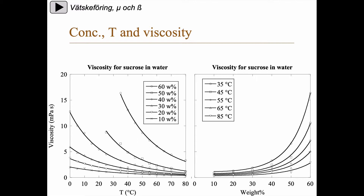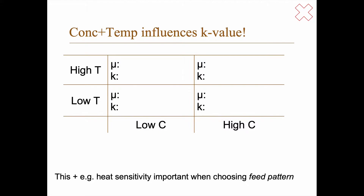If you, for example, have a sucrose in water solution, you have a decreasing viscosity with increasing temperature. So at low temperatures the viscosity is higher, so it doesn't flow as easily, and at high temperature you have a lower viscosity. And if you instead increase the concentration, what you get is an increasing viscosity with increasing concentration. This is important because it affects the heat transfer coefficient — specifically, how turbulent the flow will be. It's easier for something to become turbulent if the viscosity is low.